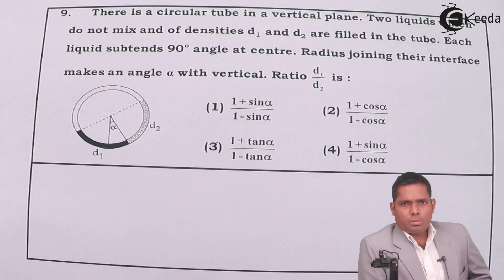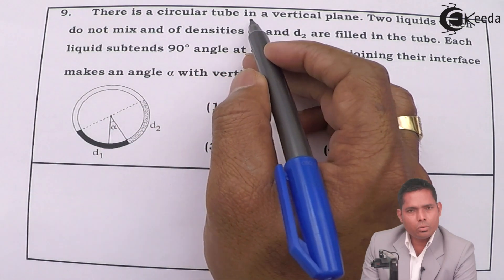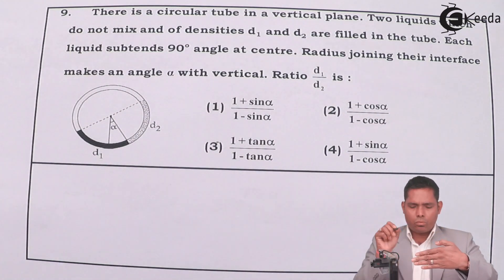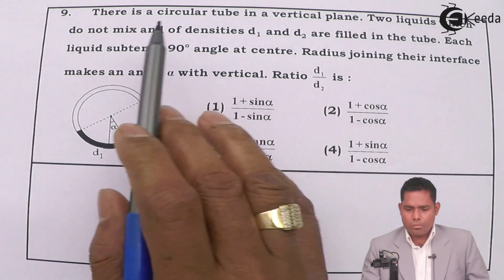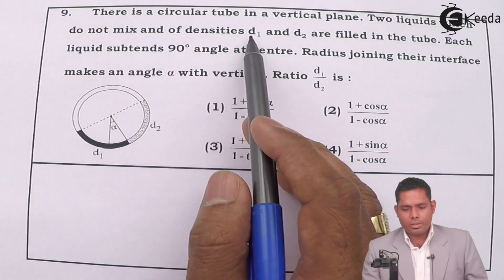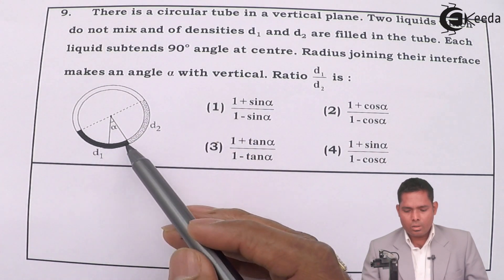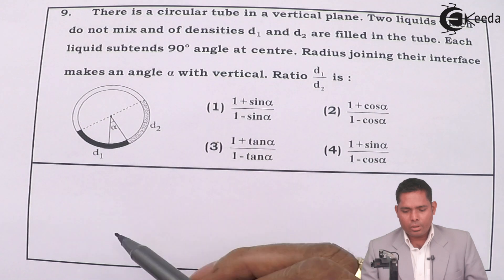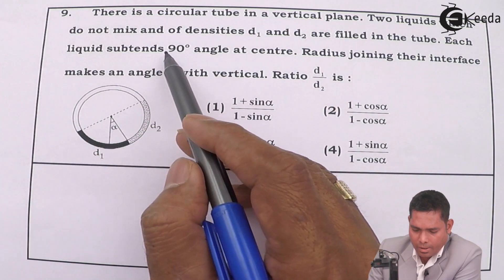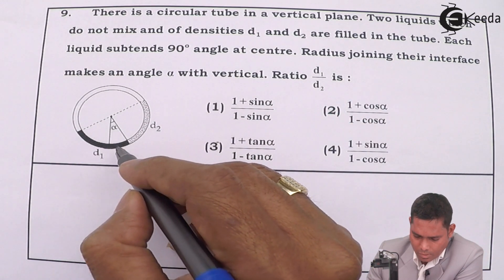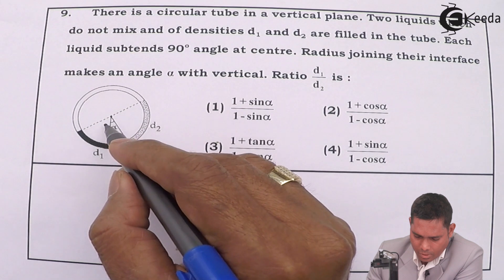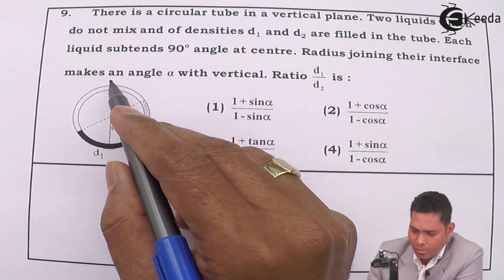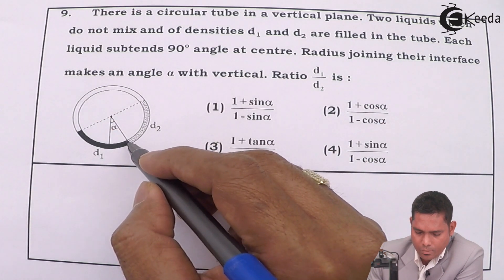Let us move to question number nine. The question says there is a circular tube in a vertical plane. This tube contains two liquids which do not mix, of densities d1 and d2. One liquid is shown in black and the other in a different color — each liquid subtends 90 degrees at the center.